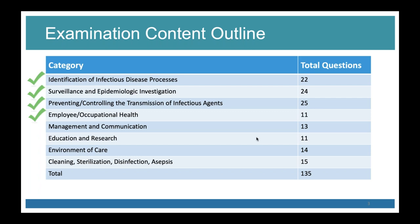At this point we've covered identification of infectious disease processes, surveillance and epidemiologic investigation. Update: Danielle Rankin should be able to do our statistics presentation — at least the first portion — on September 9th. We skipped chapter 13, the statistics chapter, but she's going to cover it then. She's literally a whole PhD, so she's excellent.